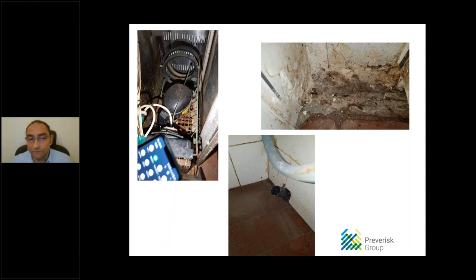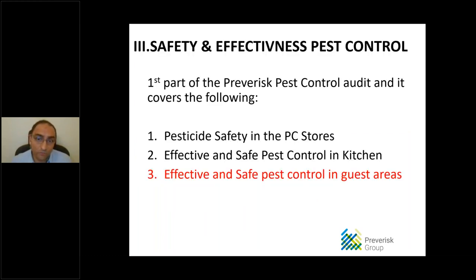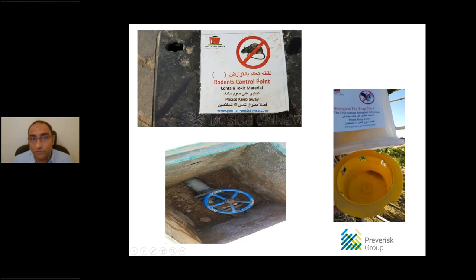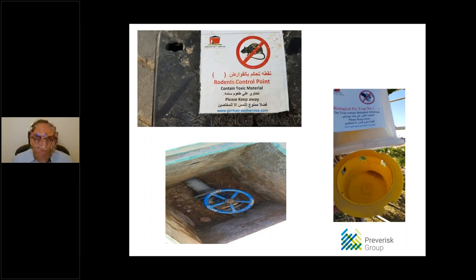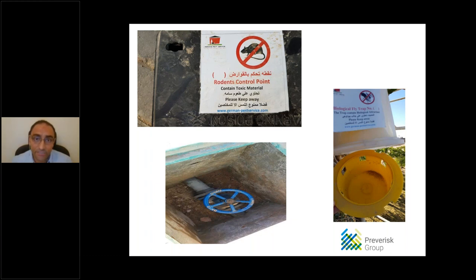In the public areas portion of the audit, we check that mechanical pest control bait stations are well labeled, locked, and contain active poison. Keys should never be left attached to the bait station boxes since children could open them — a serious safety concern. We also review fly hunting units and the treatments applied to manholes.